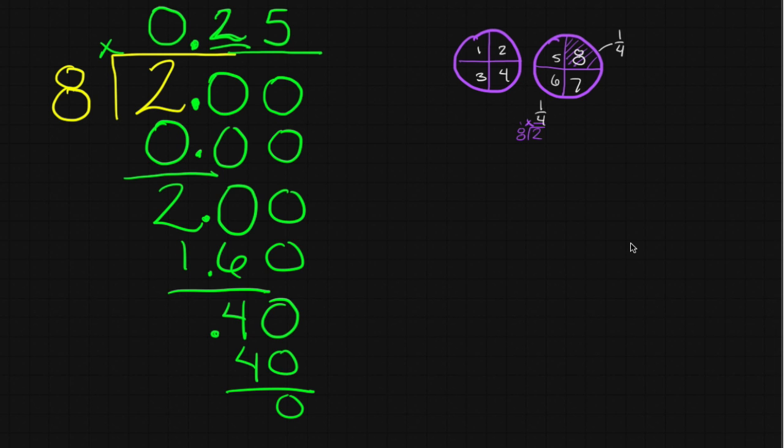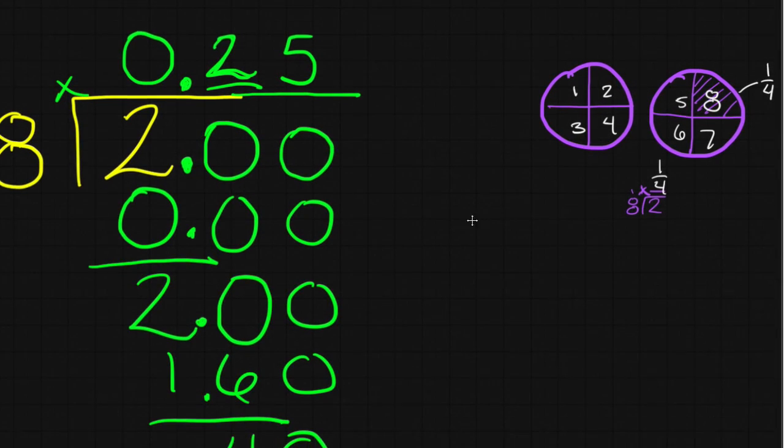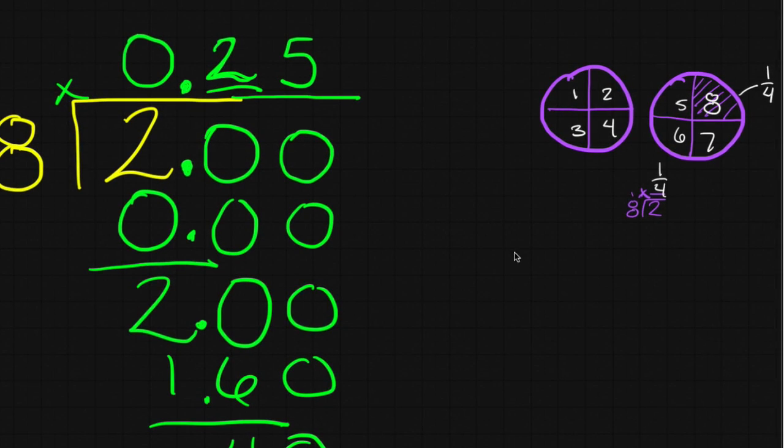Which is a little bit weird because over here I thought the answer was one-fourth. Well, it turns out that these answers are the same. Hopefully you recognize that one-fourth is the same as or is equivalent to twenty-five hundredths. And obviously as a decimal that's twenty-five hundredths. So these numbers match. One-fourth is twenty-five hundredths.